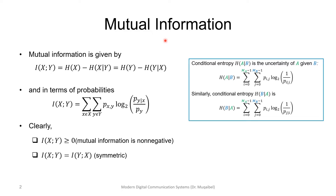Mutual information is defined as the information between two sources. It's represented as I(X,Y) — the mutual information between X and Y. It's defined to be the entropy of X minus the conditional entropy of X given Y. Alternatively, we can say it's the entropy of Y minus the entropy of Y given X. So finding the mutual information requires the conditional entropy.